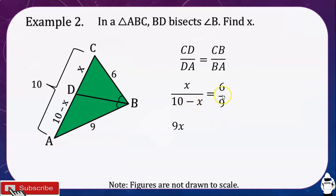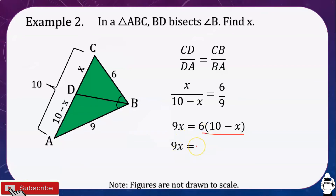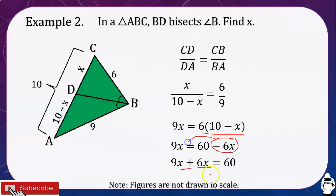Using cross multiplication, 9 times X equals 6 times the quantity (10 minus X), so 9X equals 60 minus 6X. Using the addition property of equality, we bring the 6X to the left side: 9X plus 6X equals 60, so 15X equals 60. Dividing both sides by 15, X is equal to 4.